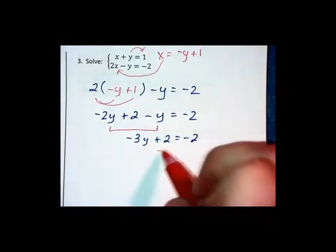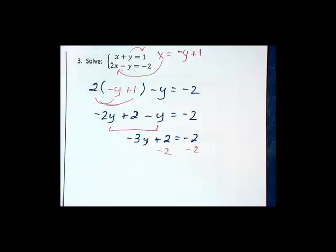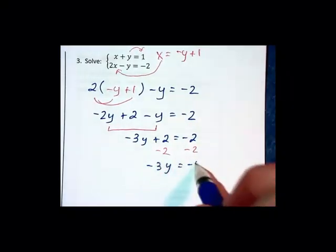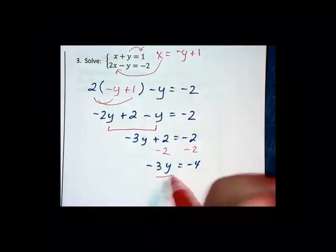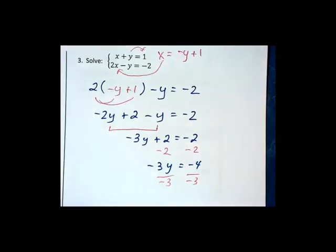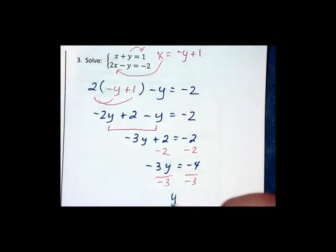We subtract 2 on each side, which gives us negative 3y equals negative 4. After we divide through by negative 3, we get y equals 4 thirds.